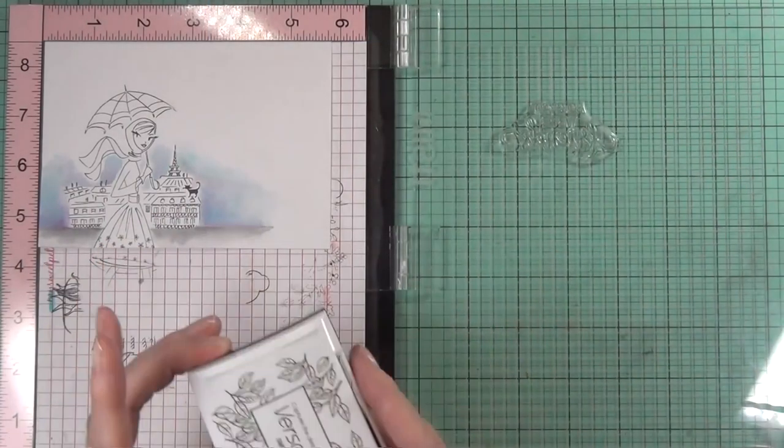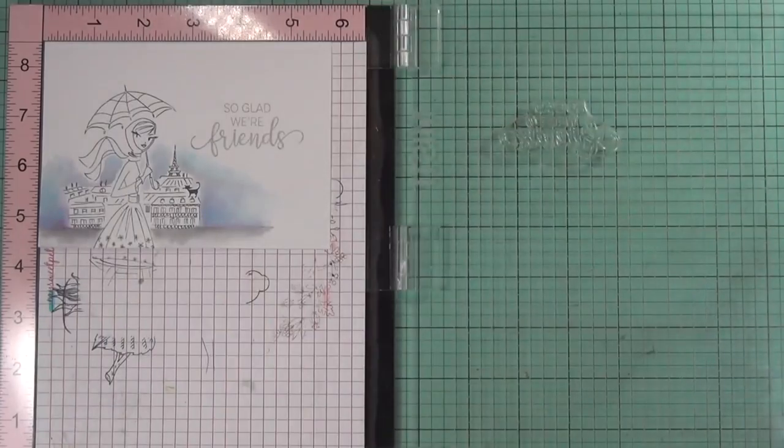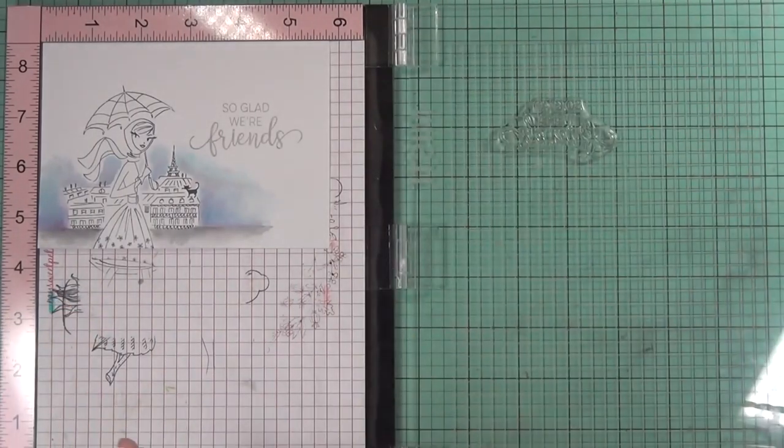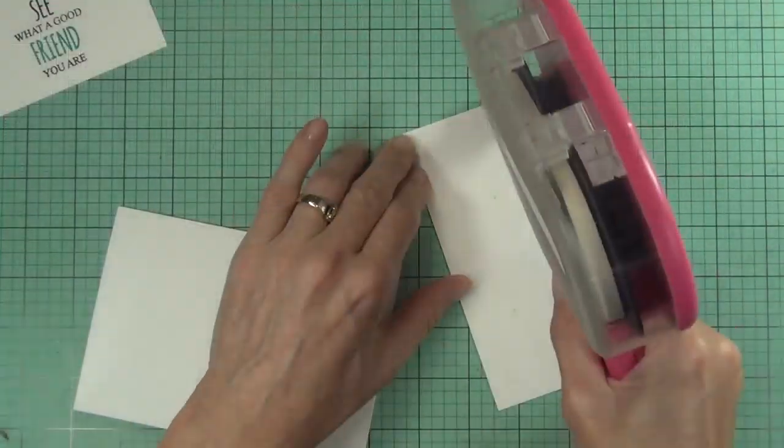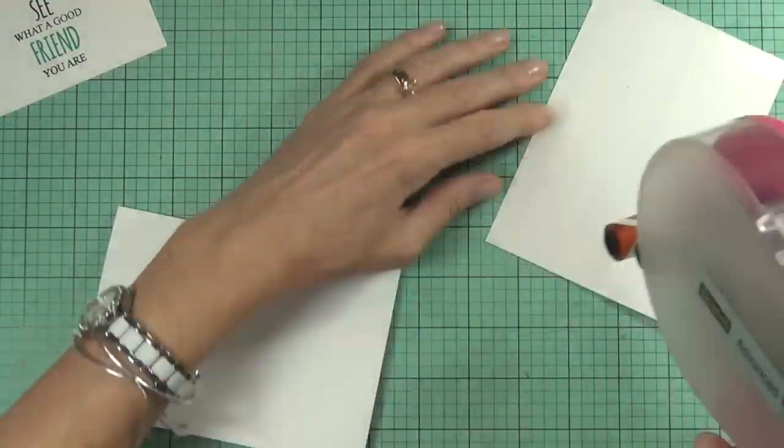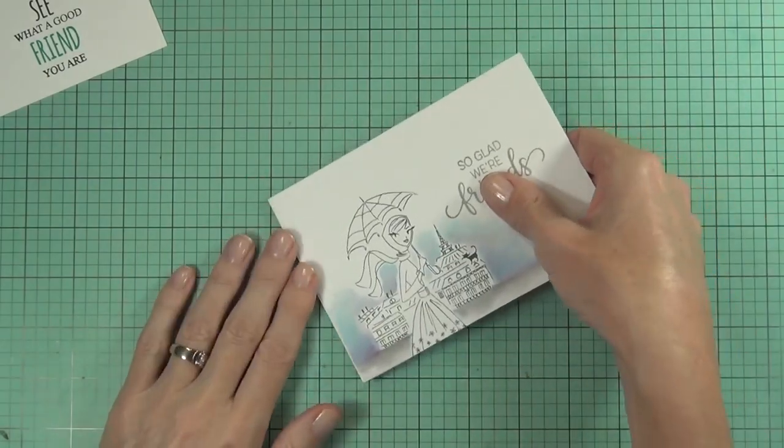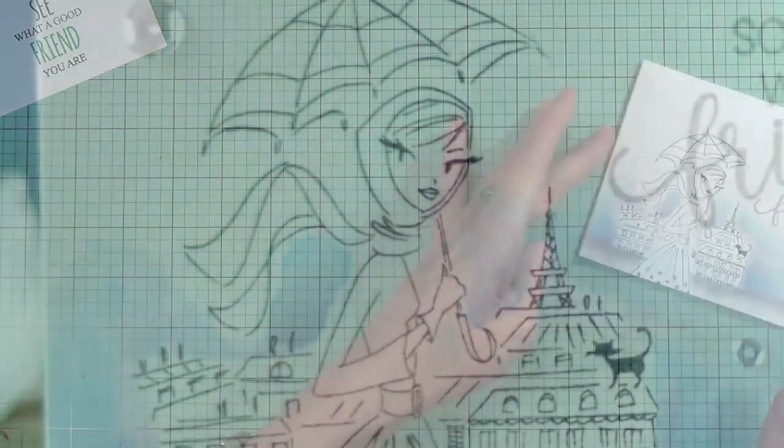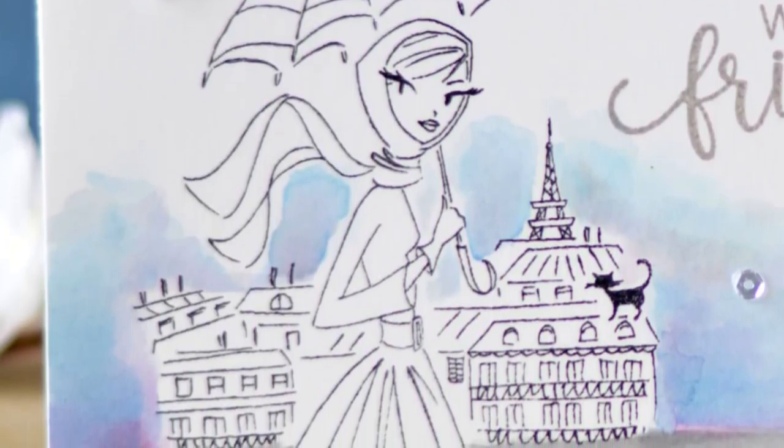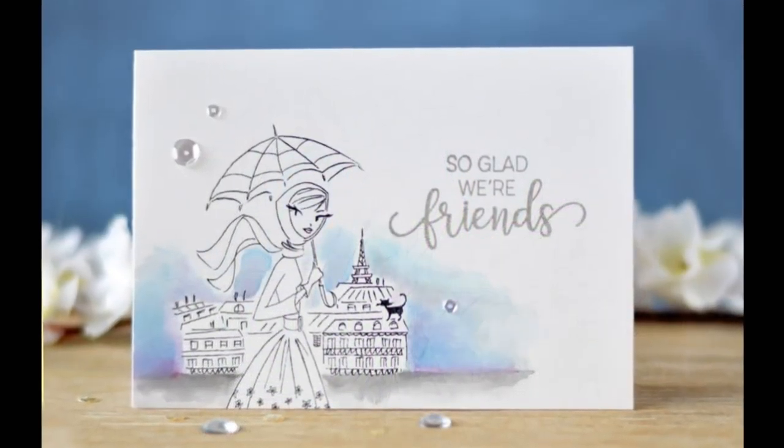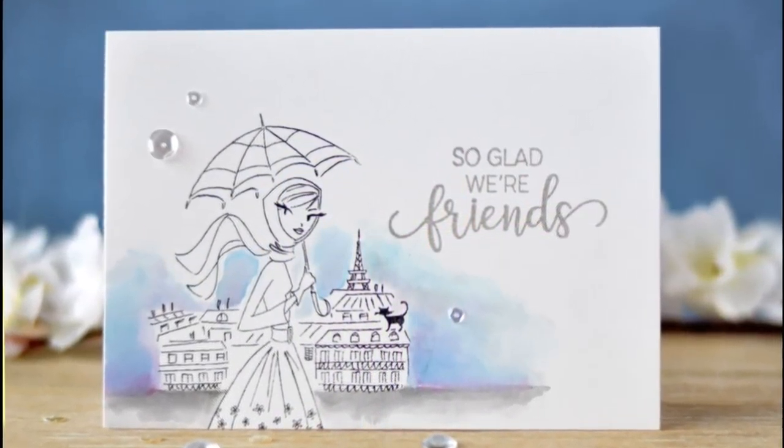Now for the girls I'm using some sentiments from a really sweet set which is called Choose Happy. I stamped the gray ink a couple of times just because it is on the Bristol smooth. I used my ATG gun to adhere that together and as an extra detail I just added a couple of clear sequins.